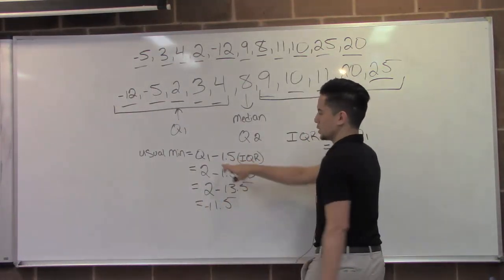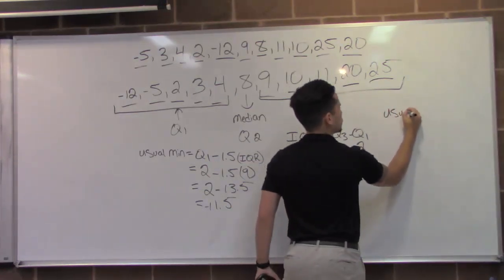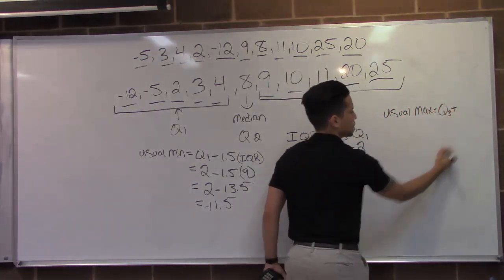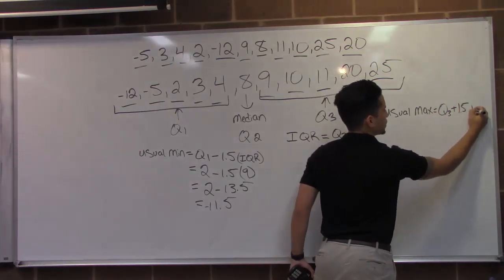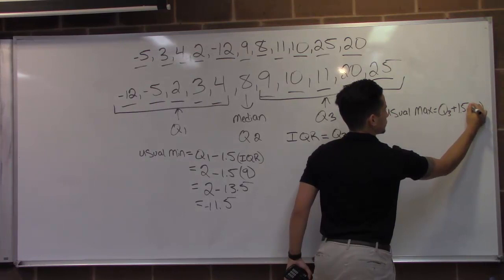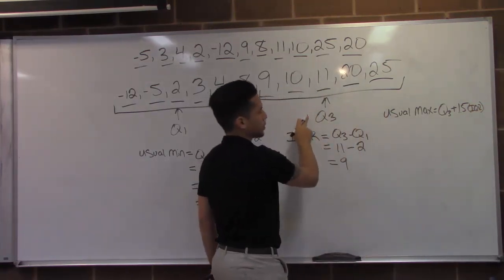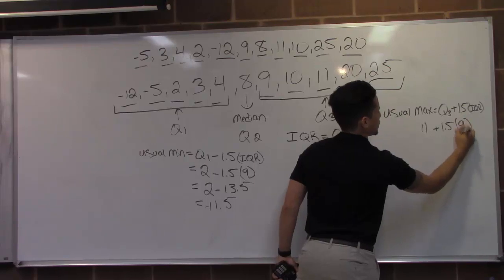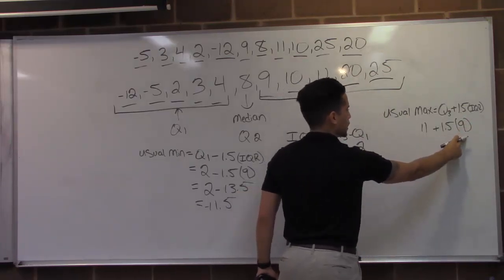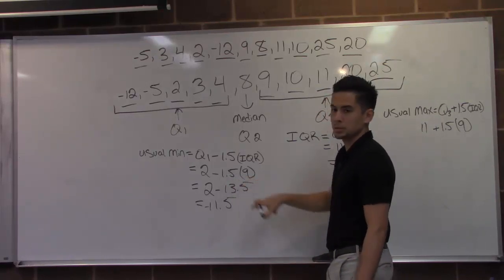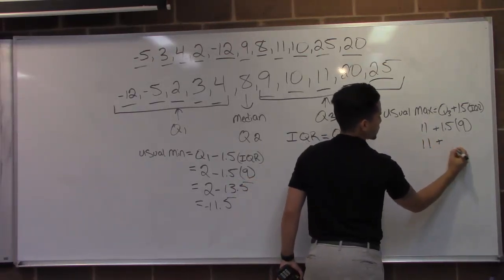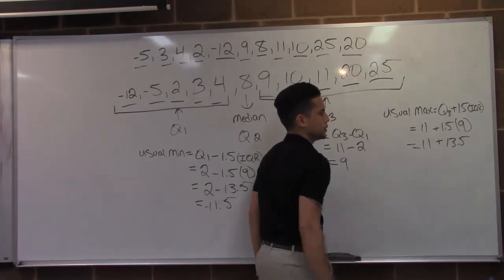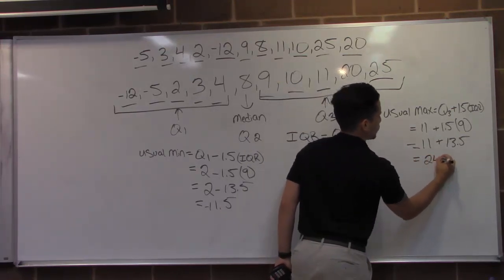So this time, instead of subtracting, we're going to add. So it's going to be usual max equals Q3 plus 1.5 times IQR. And then it's 11 is our Q3 plus 1.5 and 9. We already know what 1.5 times 9 is from here, which is 13.5. So it's going to be 11 plus 13.5. And all we've got to do is add this up, which will give us 24.5.